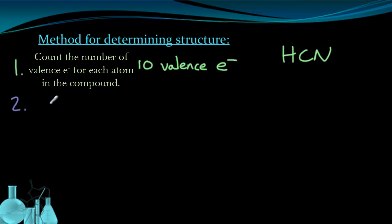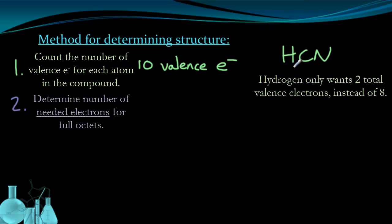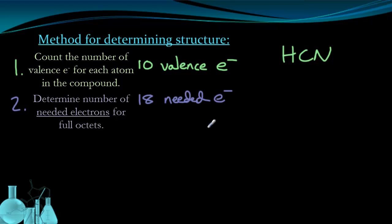The second step is to determine how many electrons I need to satisfy every single octet. Now, hydrogen is an important exception. Hydrogen is one of those elements that only needs two valence electrons. So I'm only going to count it as two. So hydrogen needs two. Carbon needs eight. Nitrogen needs eight. So I add that all up. I have 18 total needed electrons. I sometimes call these octet electrons because I need 18 for an octet for everything.